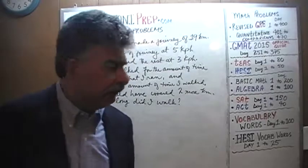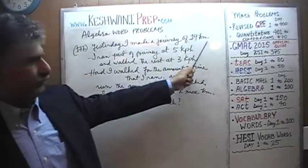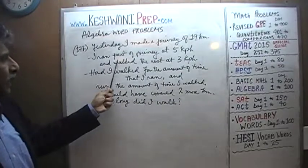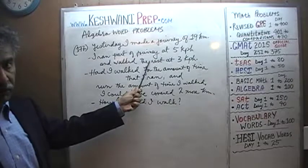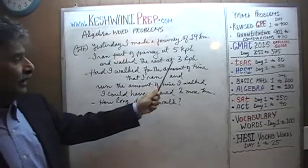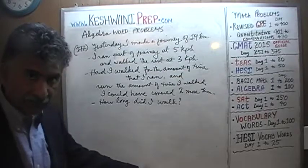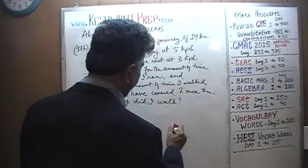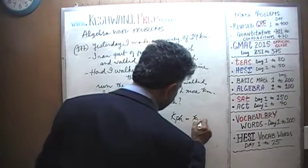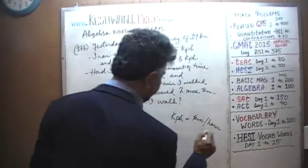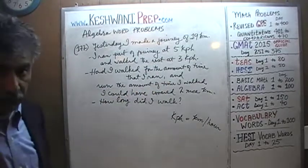It says: yesterday I made a journey of 19 kilometers. I ran part of my journey at 5 kilometers per hour, and then I decided to walk the rest of the distance at 3 kilometers per hour. That's my speed for running - 5 kilometers per hour - and then I walked the rest of the time at 3 kilometers per hour.